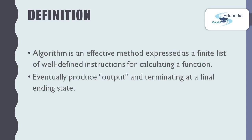If we explain the process of the algorithm in more formal words, we can say: starting from an initial state and initial input, perhaps empty, the instructions describe a computation that, when executed, proceeds through a finite number of well-defined successive states, eventually producing output and terminating at a final ending state.